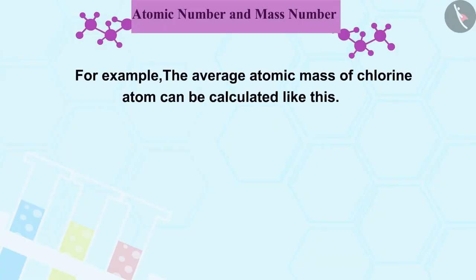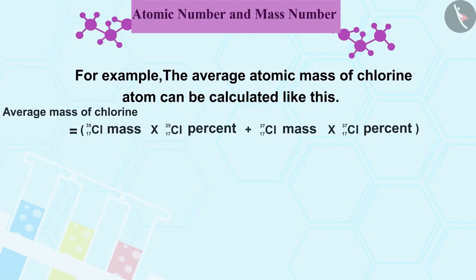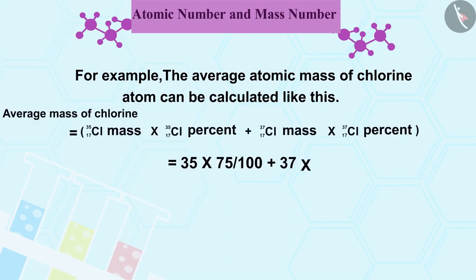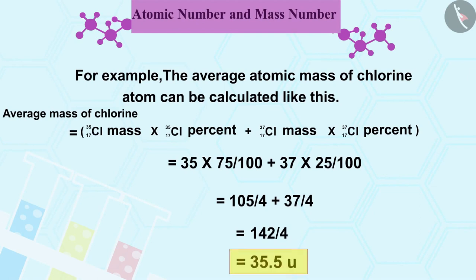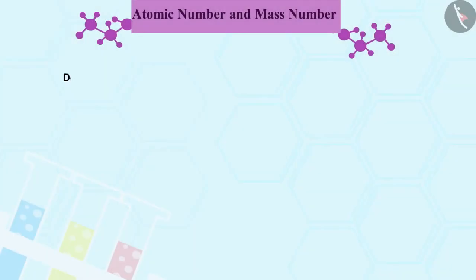For example, the average atomic mass of chlorine atom can be calculated like this. This means that if we take some quantity, it will have isotopes of chlorine and the average mass will be 35.5. Do you know one more interesting thing?